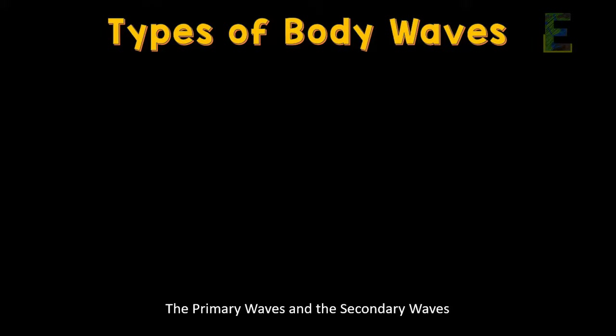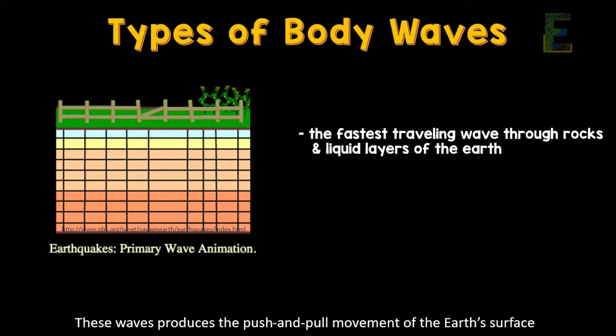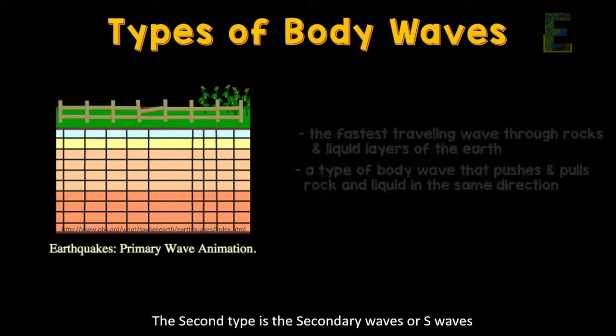There are two types of body waves: the primary waves and the secondary waves. First is the primary waves, or P waves. These are the fastest kind of wave because they can move through solid rock and liquid layers of the Earth. These waves produce the push and pull movement of the Earth's surface.